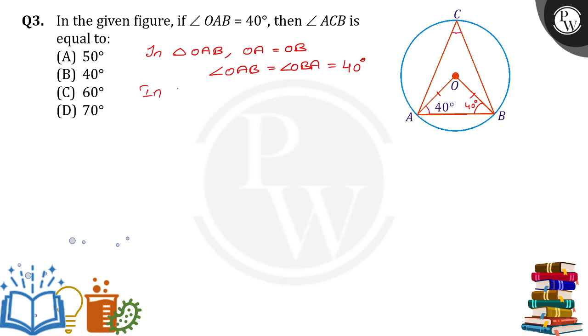Now in triangle OAB, sum of angles is equal to 180 degrees. So angle OAB plus angle OBA plus angle AOB is equal to 180 degrees. Now 40 plus 40 plus angle AOB is equal to 180 degrees. 40 plus 40 is 80. So angle AOB is equal to 180 minus 80 degrees, 100 degrees.